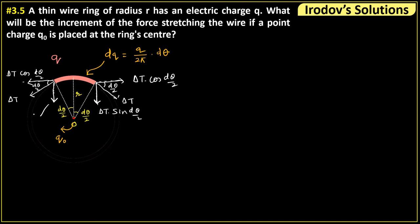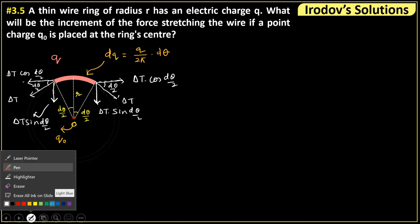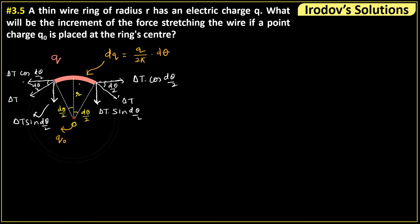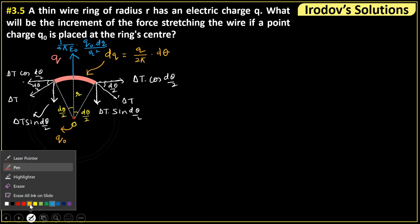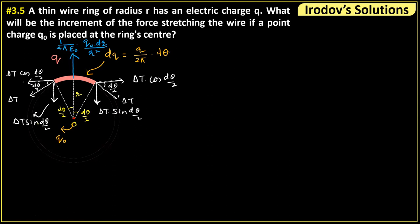These are the components of the tension. Now because of the charge q₀ placed at the center, there will be an electrostatic repulsion on the element dq — we treat dq as a point charge, which is the purpose of taking such a small part. The force of repulsion between these two point charges is: dF = (1/4πε₀) · q₀·dq / r². Since the whole ring and every little part is in equilibrium, the equilibrium of this element gives us the balance condition.